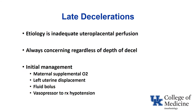Late decelerations result from inadequate uteroplacental perfusion and are always concerning. They can be subtle — a drop of just 5 to 10 beats per minute — but even subtle late decelerations are still a sign of inadequate uteroplacental perfusion. Initial management is in-utero resuscitation: put oxygen on the mother, make sure she's on her side, give a fluid bolus, and check blood pressure. If she has an epidural on board and her blood pressure is low relative to baseline and she's having late decelerations, treat with fluid and a vasopressor.